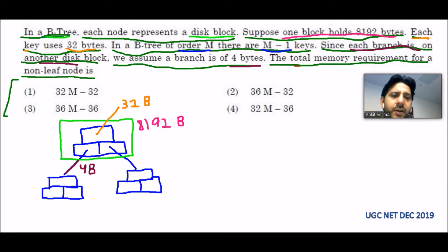They are asking for the total memory required for a non-leaf node. Those who are not leaf, what is the memory required? There is a clear formula that size of non-leaf node equals M times PB.